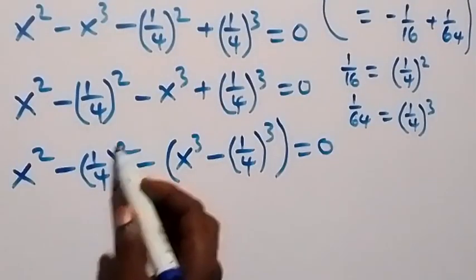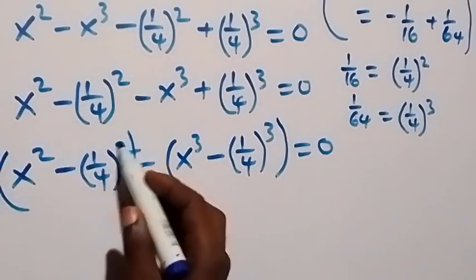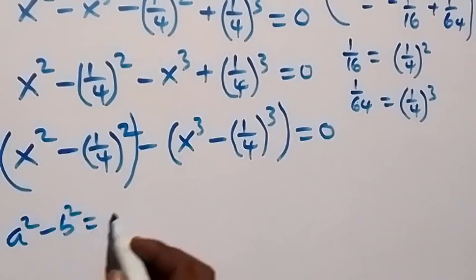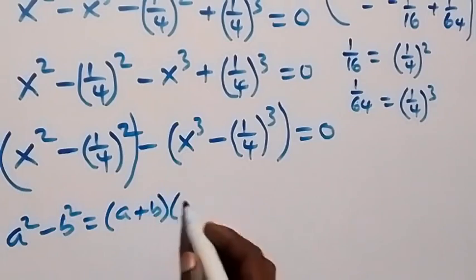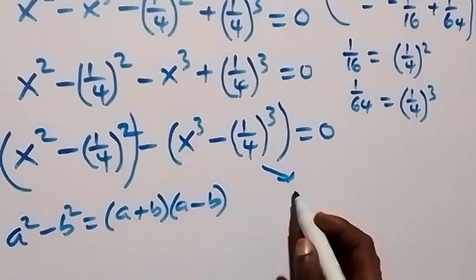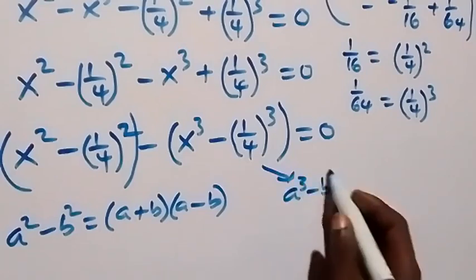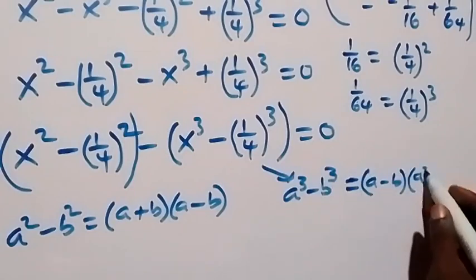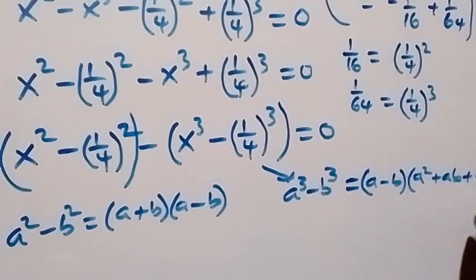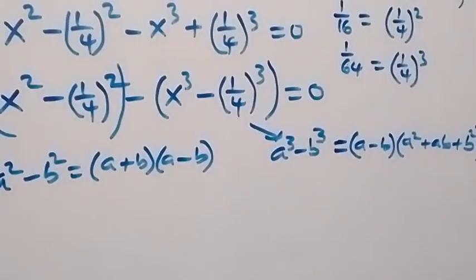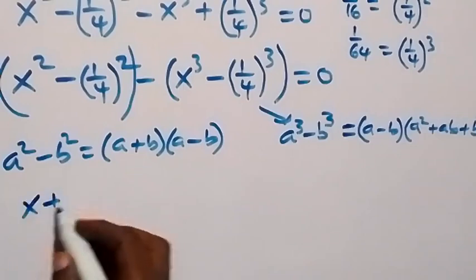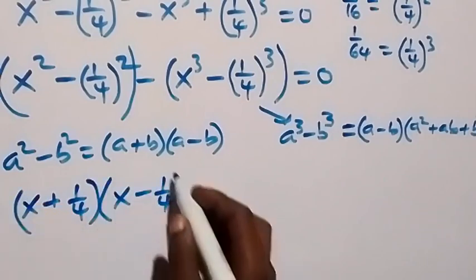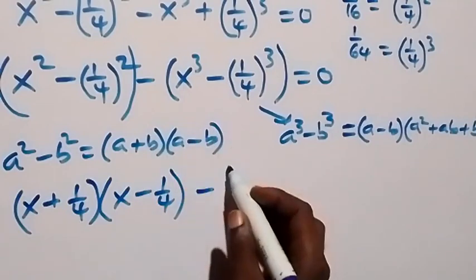Now the first part can be put in brackets. This follows the difference of two squares: a squared minus b squared gives us a plus b multiplied by a minus b. The other part uses difference of two cubes: a cubed minus b cubed equals a minus b times bracket a squared plus ab plus b squared. Applying this, we get x plus 1 over 4, into bracket x minus 1 over 4, then minus into bracket the application of difference of cubes.